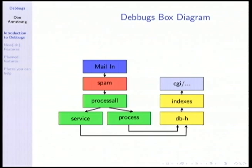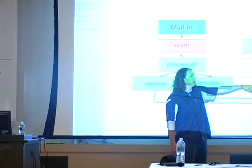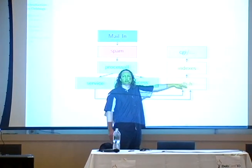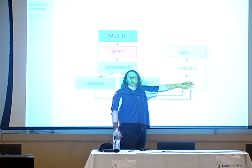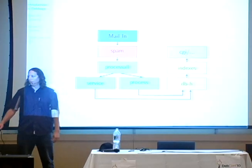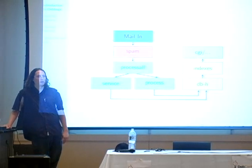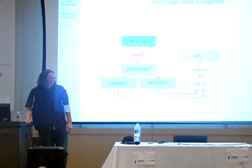Inside of Debbugs itself, it looks like this. Mail comes in and gets de-spammed. There's a process called process-all. Mails sent to submit, a bug number, or a bug number dash something go to the script called process. All the control and request mails go to service. Various bits of things happen; they get stored in db-h, which is the flat file system. This contains all the information there is to know about the state of bugs in Debian. The final bits are the indexes, which are built out of db-h, and then the CGI, which is the web front end. So everything there is to know about Debbugs is right here — you all can now replace me and become prominent Debbugs hackers.